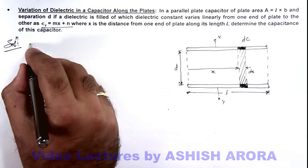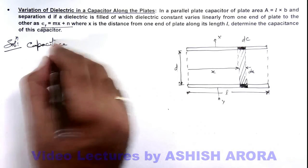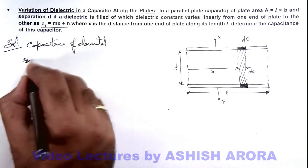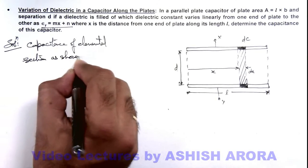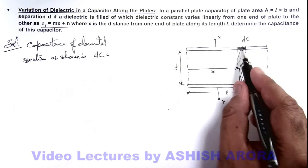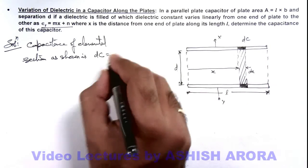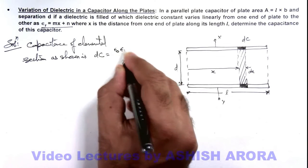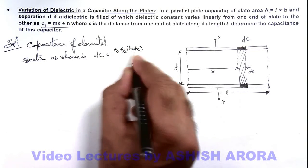So here we calculate capacitance of elemental section as shown. This can be written as dc, and for these two plates their width is b and length here I am taking as dx. So its capacitance will be given as ε₀εr, area of the plates is b dx divided by d.